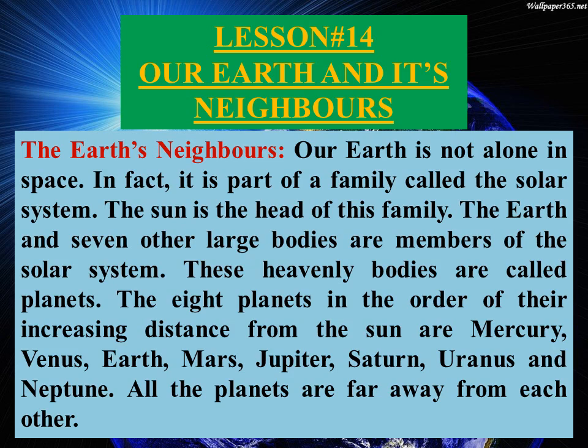These heavenly bodies are called planets. The eight planets in the order of their increasing distance from the sun are: Mercury, Venus, Earth, Mars, Jupiter, Saturn, Uranus, and Neptune. All the planets are far away from each other.